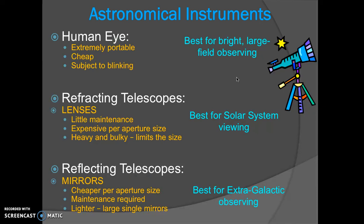So what kind of astronomical instruments do we have? To start off you have your eye. Your eye is an extremely portable useful astronomical instrument, best for bright sky large field observing. We can go outside and look at the night sky and observe those stars using just your eye. They're cheap, right? Unless you have to use corrective lenses or get eye surgery. But human eyes are subject to blinking, which can really destroy your astronomical imaging.